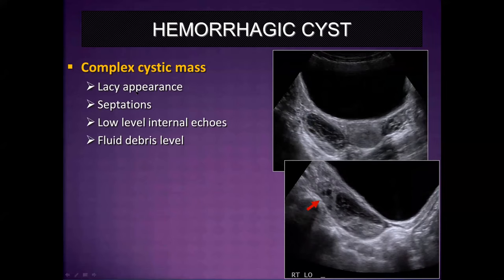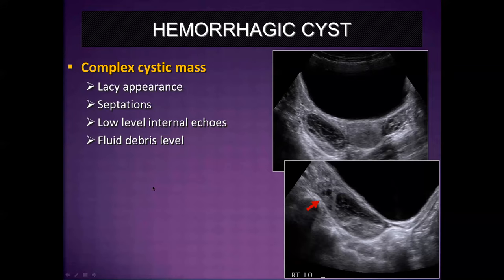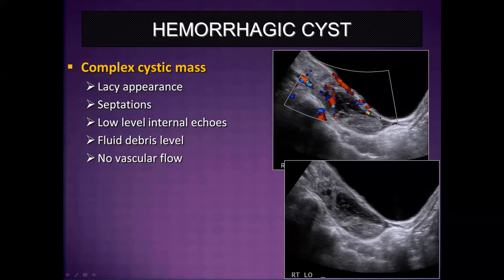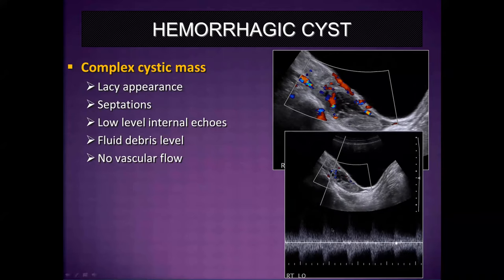Hemorrhagic cysts are complex cystic masses that can masquerade as ovarian torsion because patients can present with acute onset of severe pain. They often have a lacy reticular appearance related to organizing clotting blood. There may be septations, low-level internal echoes, or a fluid debris level — all helpful clues. Color Doppler will not show flow within the hemorrhagic cyst, but fortunately we can often see normal flow within the normal ovarian parenchyma, helping rule out torsion.